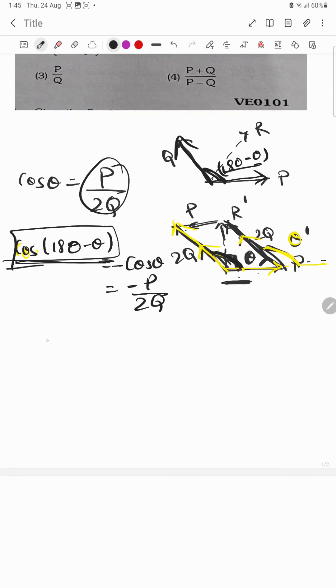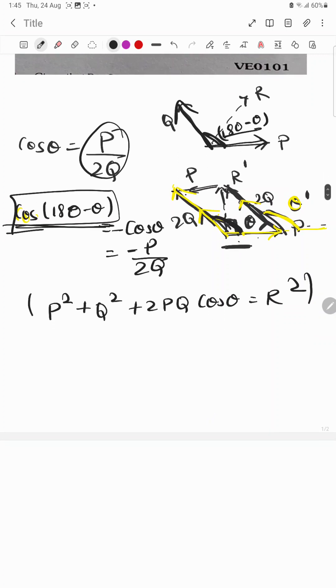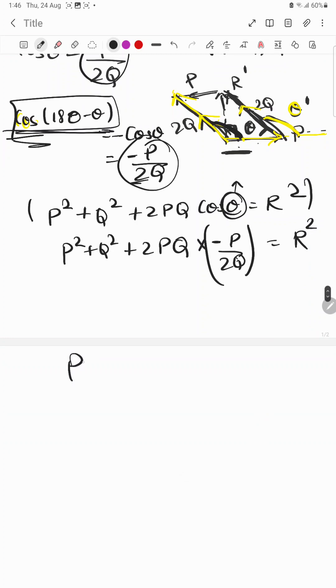Using the formula P² + Q² + 2PQ cos theta. Here the angle is 180 minus theta, and the value is minus P upon 2Q, so minus P upon 2Q, which equals R². Now on calculating...